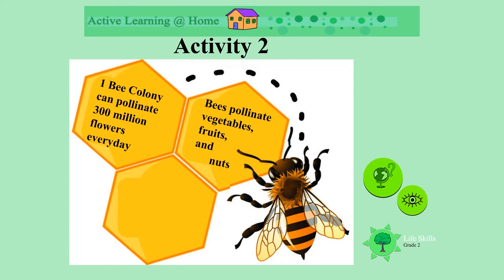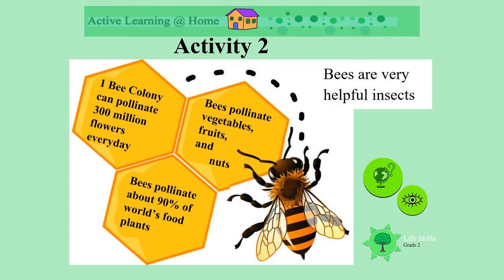Bees pollinate vegetables, fruit and nuts. Bees pollinate about 90% of the world's food plants. We must look after bees. They are very helpful to us. Don't be scared of them — look after them.